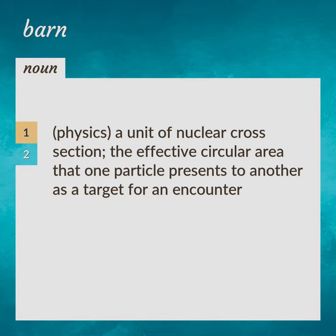Physics: a unit of nuclear cross-section. The effective circular area that one particle presents to another as a target for an encounter.